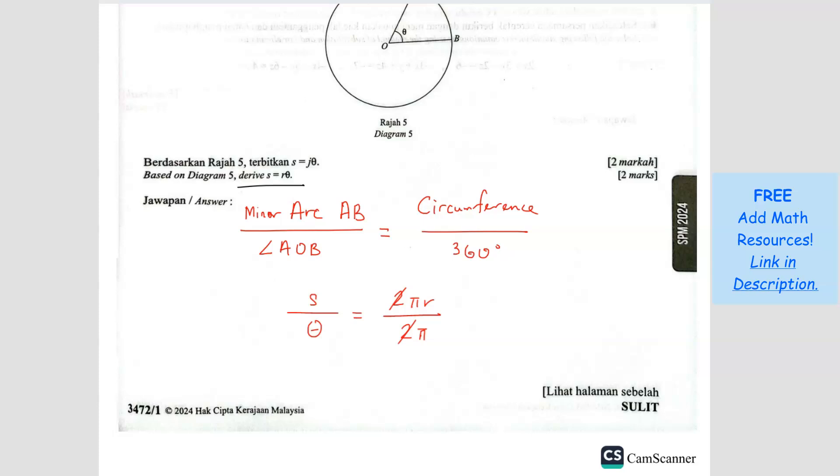So the 2 you can cancel, pi you can cancel. So S equals to... You bring this up there, it becomes R theta. Done. Proven. Proven.